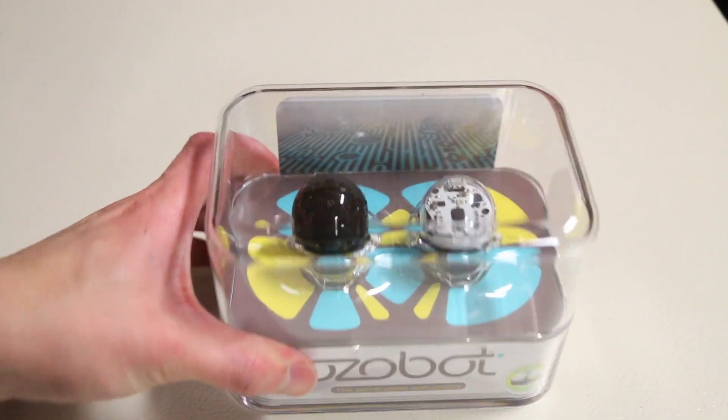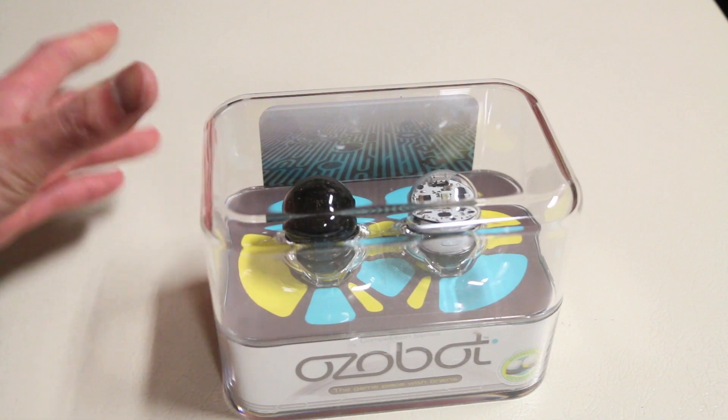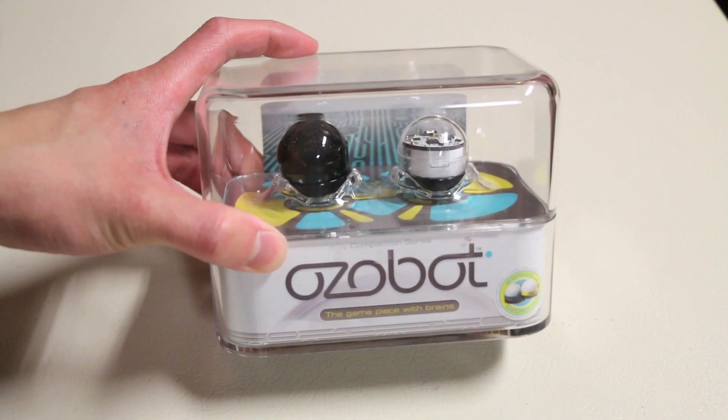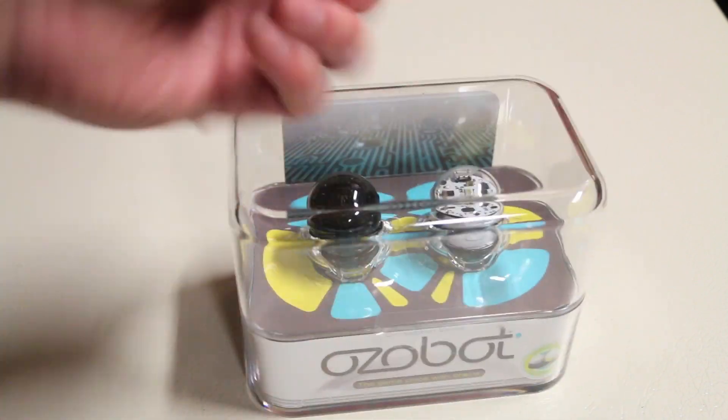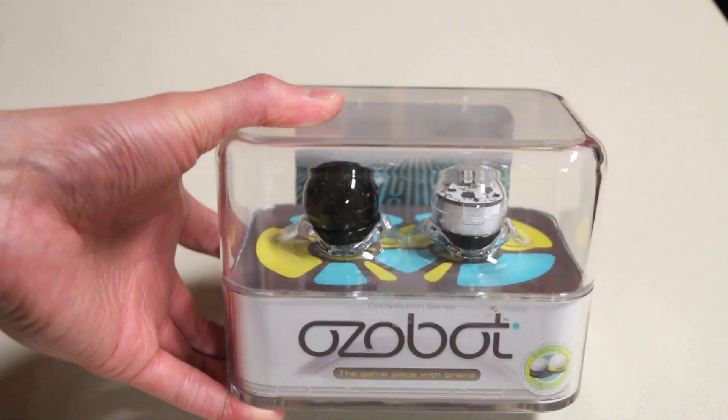So the Ozobots are pretty much a smart little robot that does a few unique tricks and of course we're going to demonstrate it to you guys in this video. This is the packaging that comes in, pretty solid, high quality, clear plastic packaging to also protect the product but also display it as well.